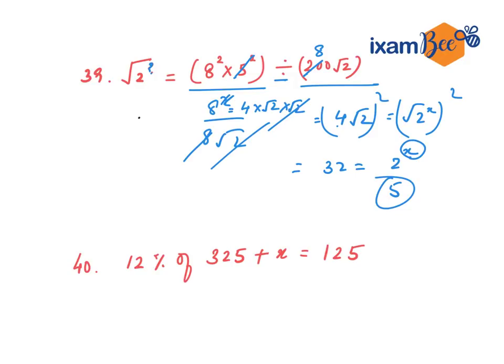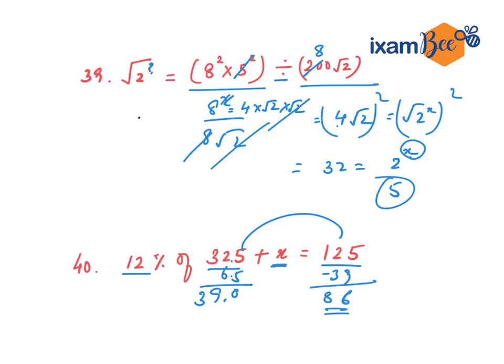Next question: 12% of 325 plus x equals 125. This is very easy. 10% of 325 is 32.5; 1% is 3.25; 2% is 6.50. So 12% of 325 is 39. Therefore x equals 125 minus 39, which is 86. You can also calculate this entirely in mind: 32.5 plus 3.25 plus 3.25 equals 39.